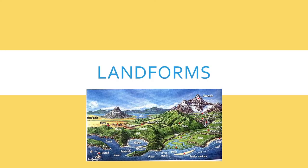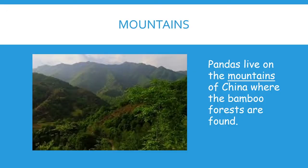The next section we will discuss and relate to the panda bear is landforms. We talked about the different types of landforms found around the world. One type of landform is the mountain, and the pandas live on the mountains of China where the bamboo forests are found.